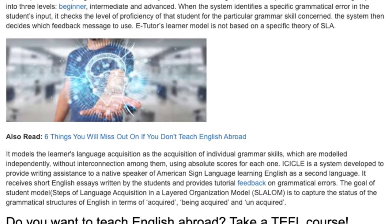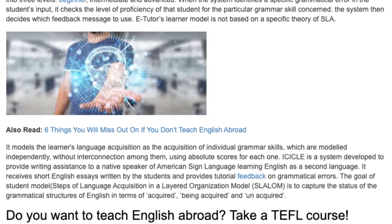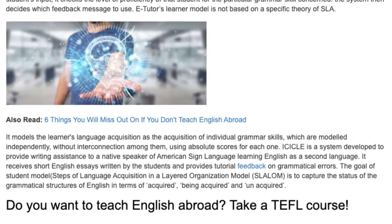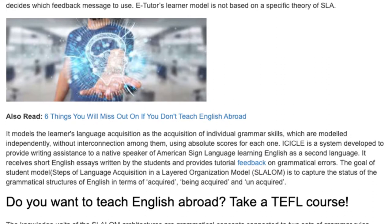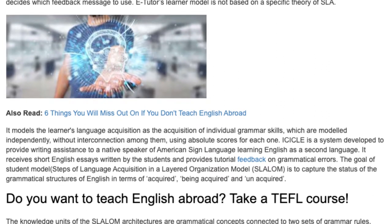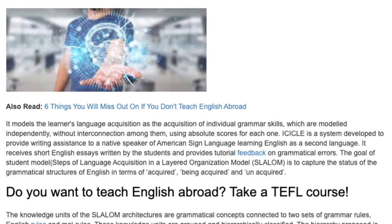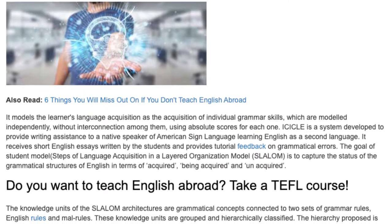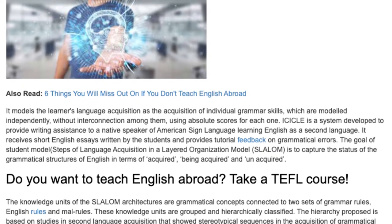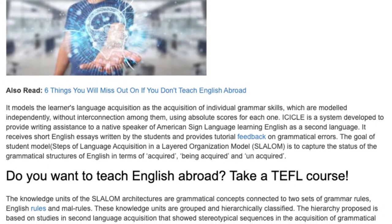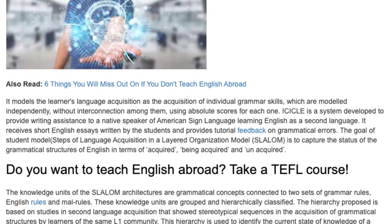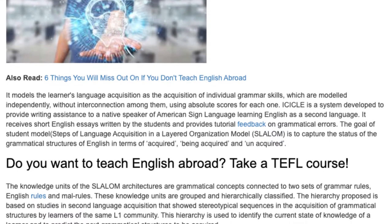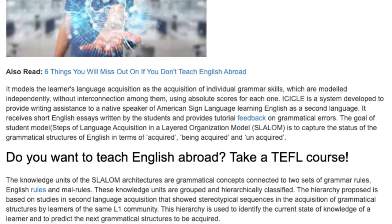eTutor's learner model models the learner's language acquisition as the acquisition of individual grammar skills, which are modeled independently without interconnection among them, using absolute scores for each one. iCICLE is a system developed to provide writing assistance to a native speaker of American Sign Language learning English as a second language.